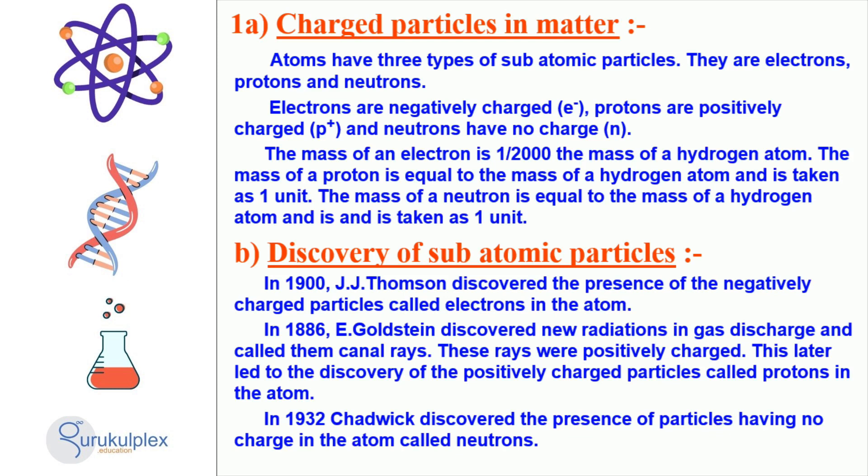J.J. Thomson discovered the presence of electrons in the atom in 1900. A year later, Ernst Goldstein identified new radiations in gas discharge that were positively charged, resulting in the discovery of protons. Finally, in 1932, James Chadwick identified the presence of neutrons. Their joint discoveries assist in comprehending the structure of an atom.